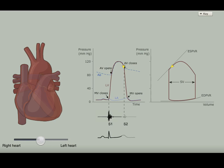When the heart is paused, you can drag your finger over the time axis of the center graphs to move through the cardiac cycle.